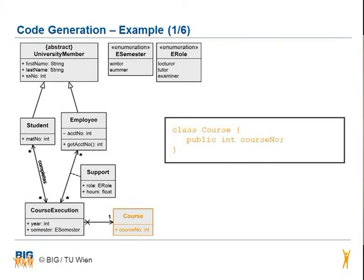The class course is translated into the keyword class followed by curved brackets around the body of the class. The body contains the code provided for the life cycle of the objects created from the class. In this example, the class course has a public attribute course number of type integer.